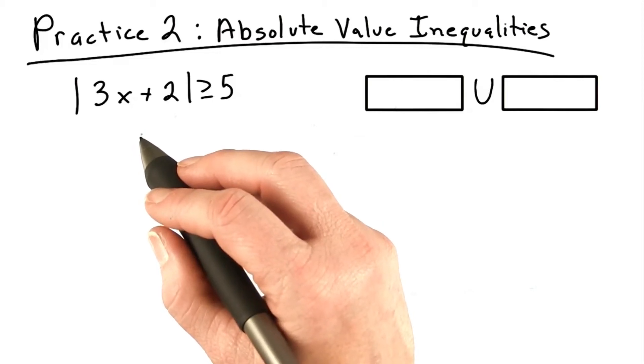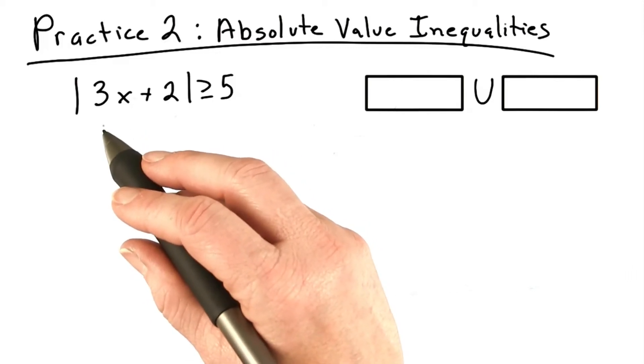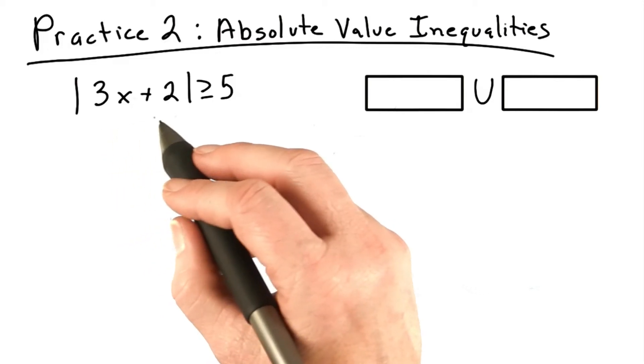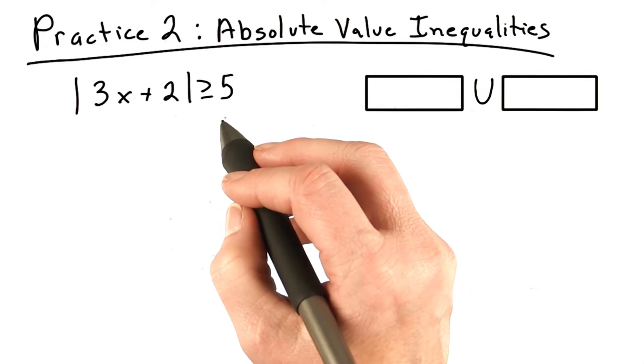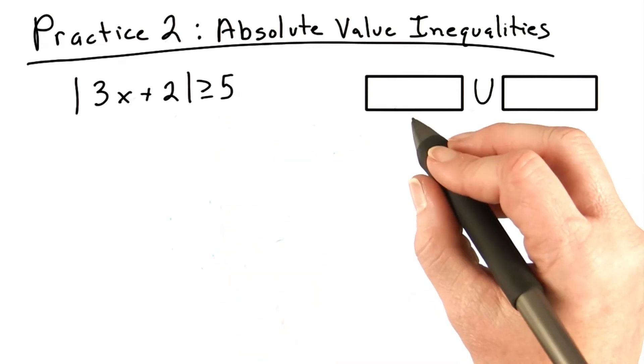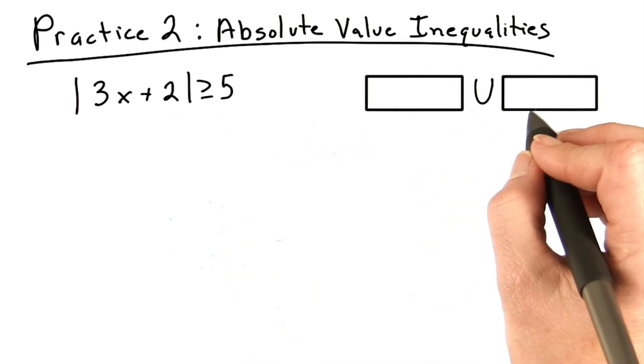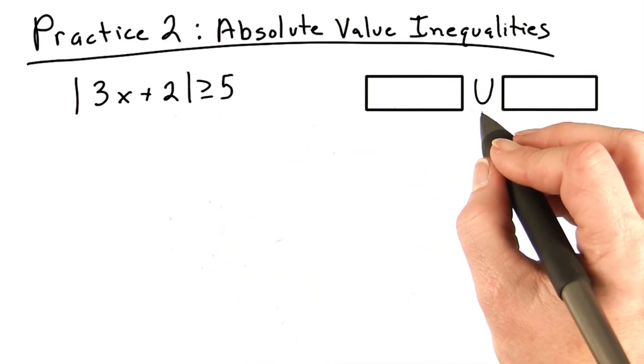For the second practice problem, let's try the absolute value of 3x plus 2 is greater than or equal to 5. You can put your answers here and here. I've already put the union symbol for you.